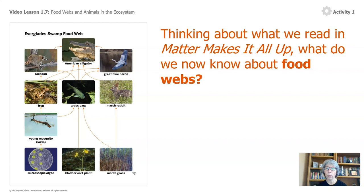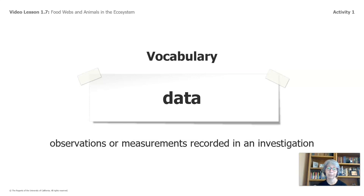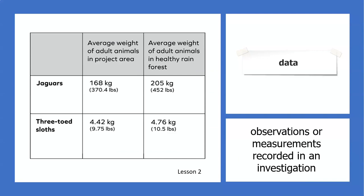Thinking about what we read — matter makes it all up. What do we know about food webs? Let's make sure we know what a food web is. A food web is a diagram that shows what eats what in an ecosystem. And while we're looking at words, let's take a look at the word data. We've been using lots of data for this chapter. Data is observations or measurements recorded in an investigation. In lesson two, we took a look at several data tables.